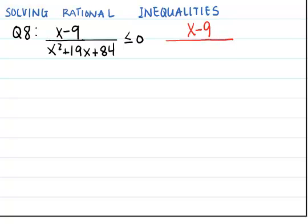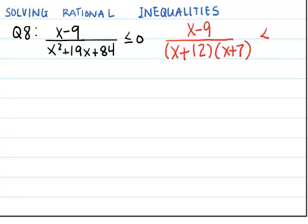The denominator is a trinomial. I can factor it by finding two numbers that multiply to 84 and add to 19. Those numbers are 12 and 7. So our factored expression is (x minus 9) over (x plus 12)(x plus 7), and we want it to be less than or equal to 0.